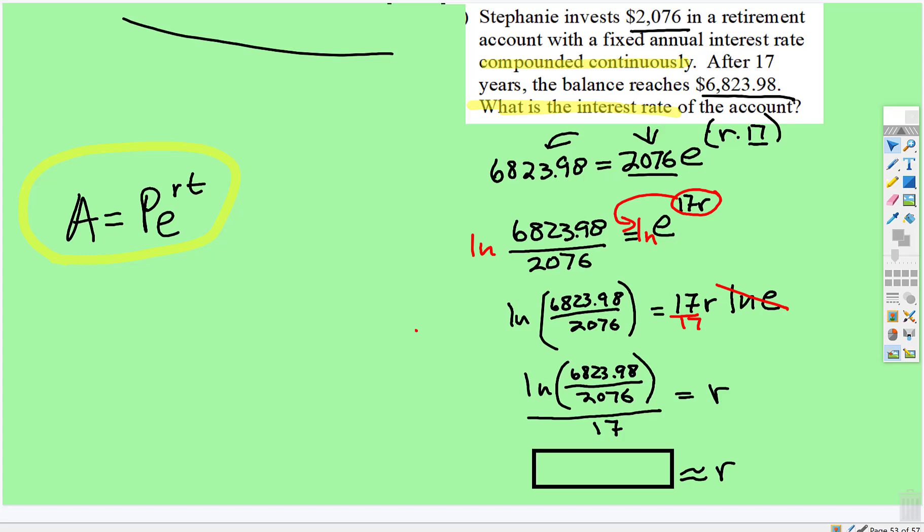You'll get incorrect answers if you don't put parentheses in the correct place. Divide 17, equals, and your calculator...